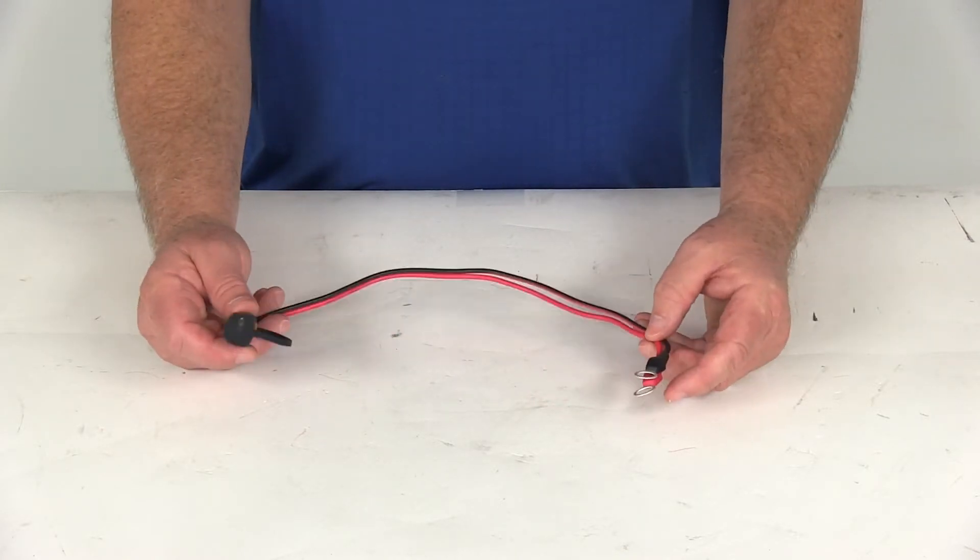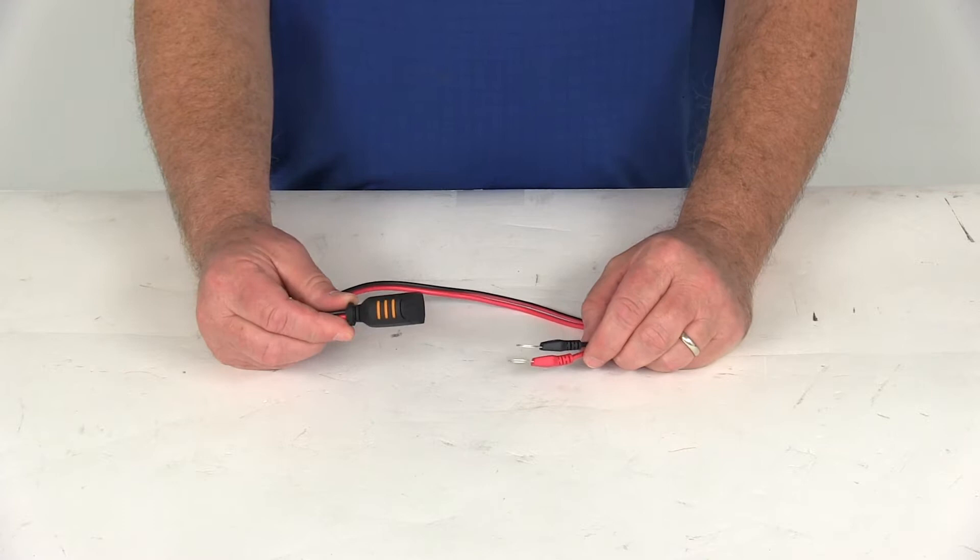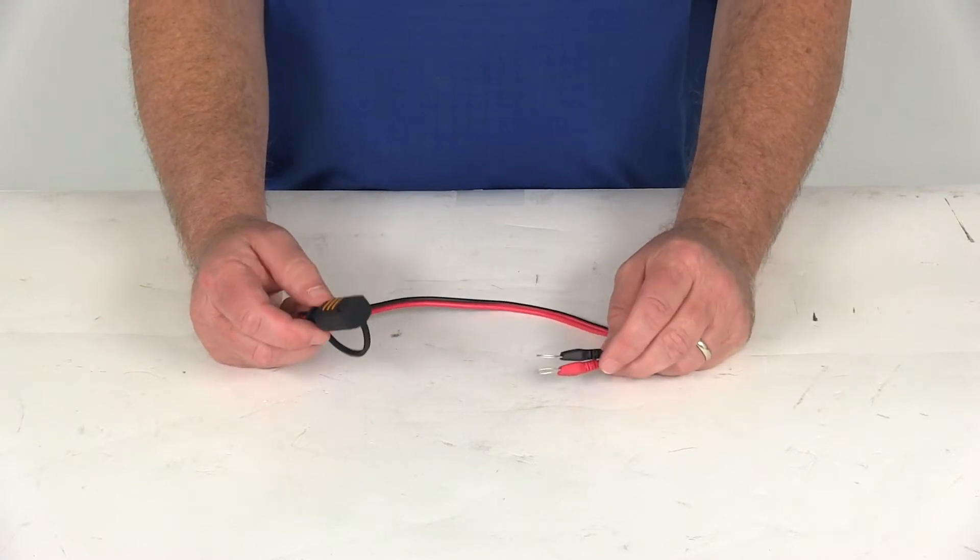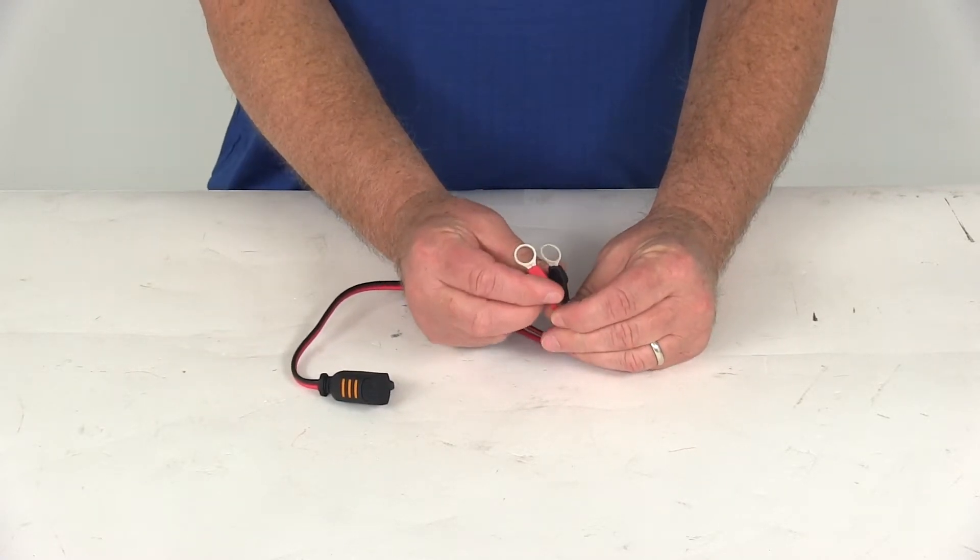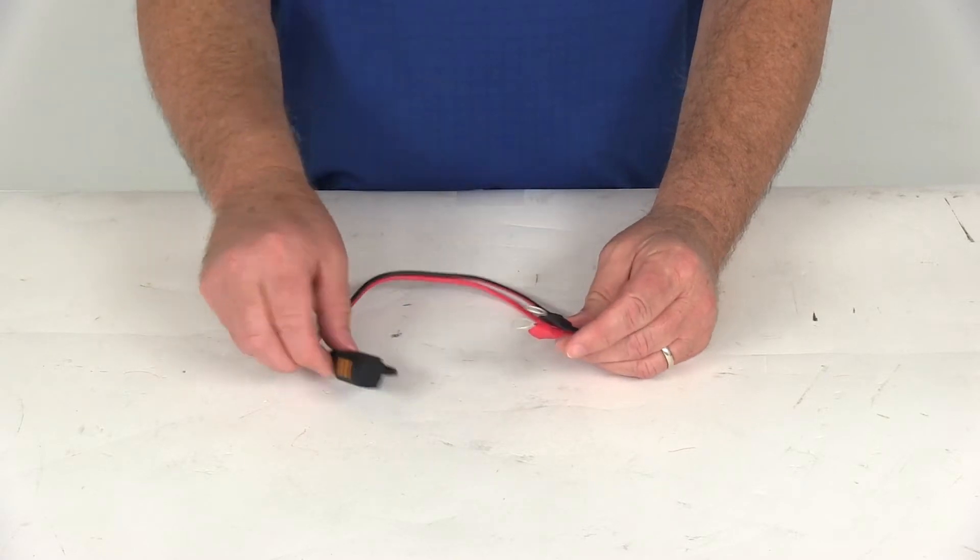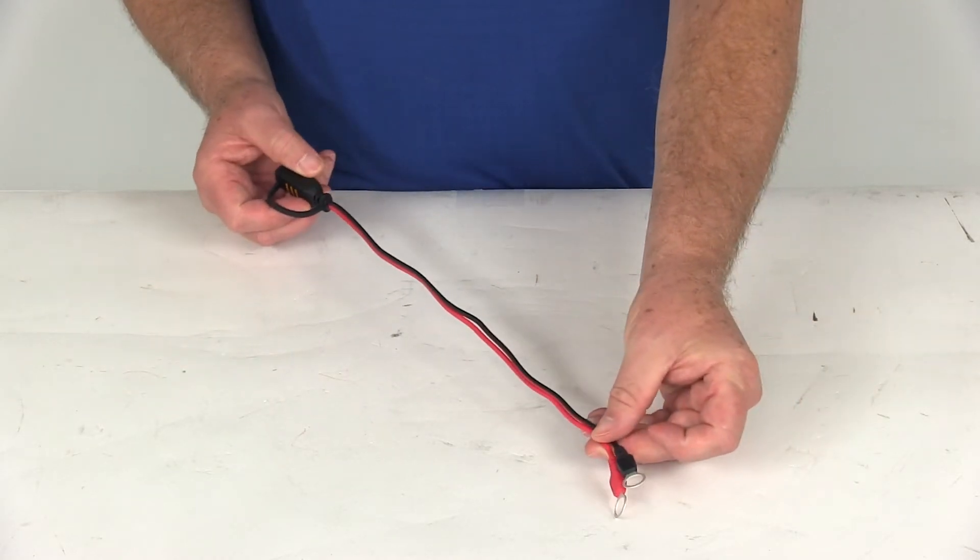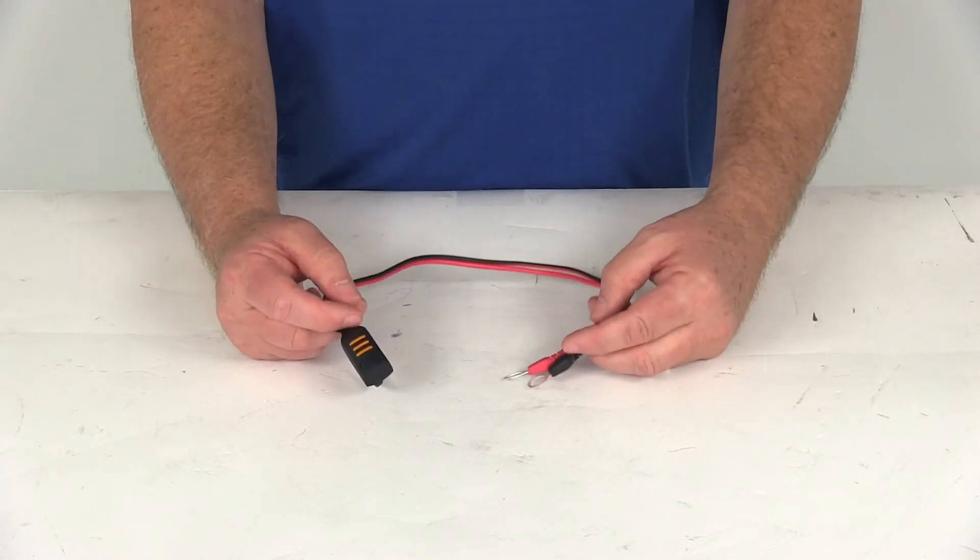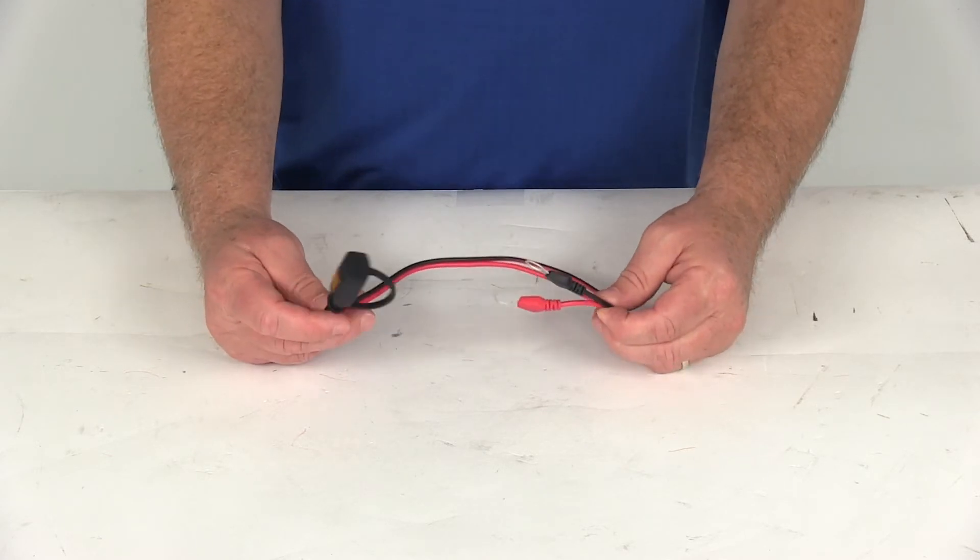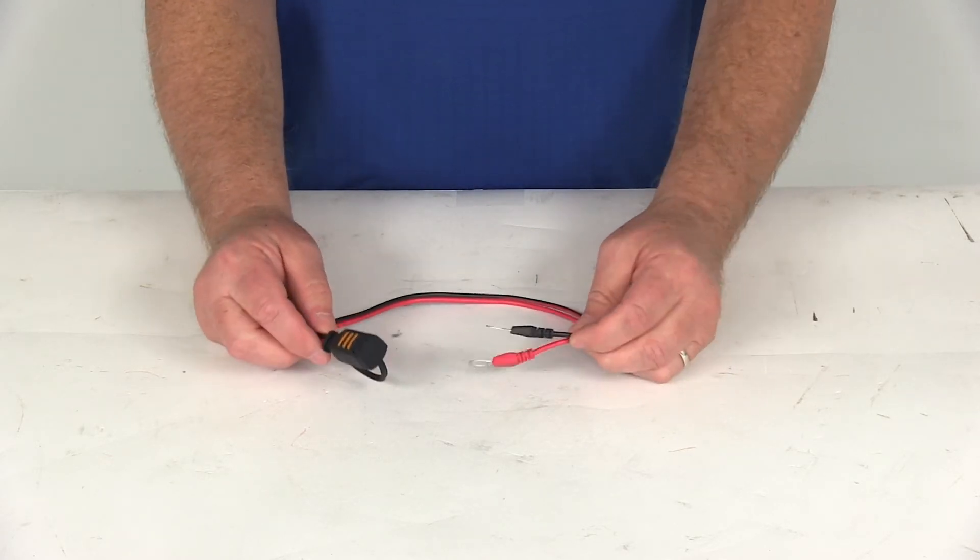Now again, the application, this is for all CTEK 6-volt and 12-volt Comfort Connect chargers. The eyelet terminal size on this is 10.5 millimeters. The total battery cable length on this is 16 inches. And this part does include this one battery charging cable with the 10.5 millimeter eyelet terminals.